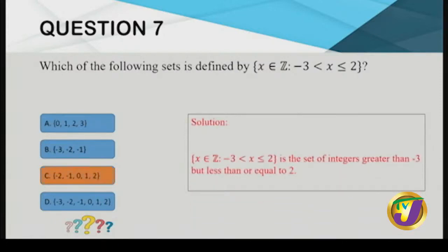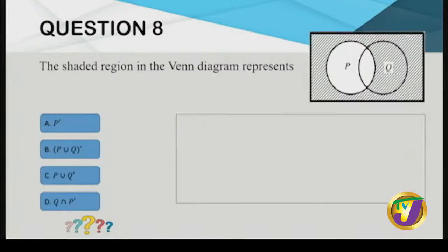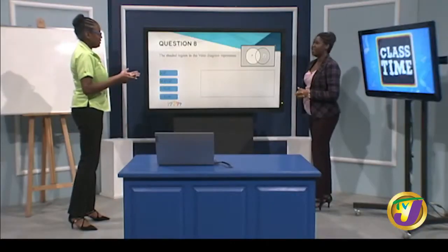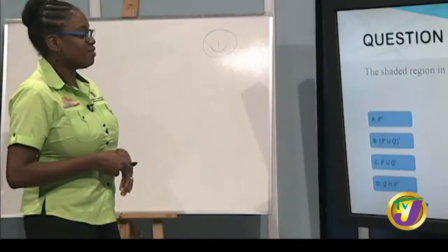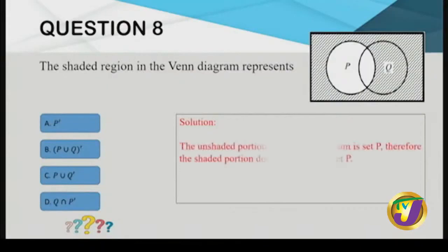Sets question eight: what does the shaded portion of this Venn diagram represent? Set P is the only region not shaded. Based on our earlier discussion of complement, anything not in P is the complement of P. Answer: A — P complement (P′).